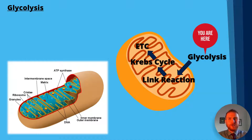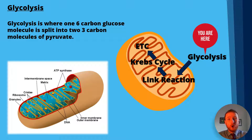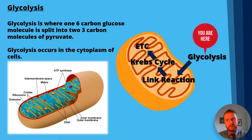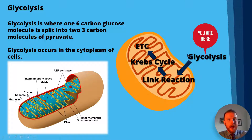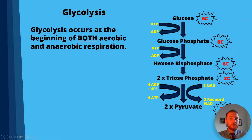Glycolysis starts off both aerobic and anaerobic respiration. It is where one six-carbon glucose molecule is split into two three-carbon molecules of pyruvate. Glycolysis occurs in the cytoplasm of cells — we're outside of the mitochondria here — so it happens in the cytoplasm at the beginning of both aerobic and anaerobic respiration.